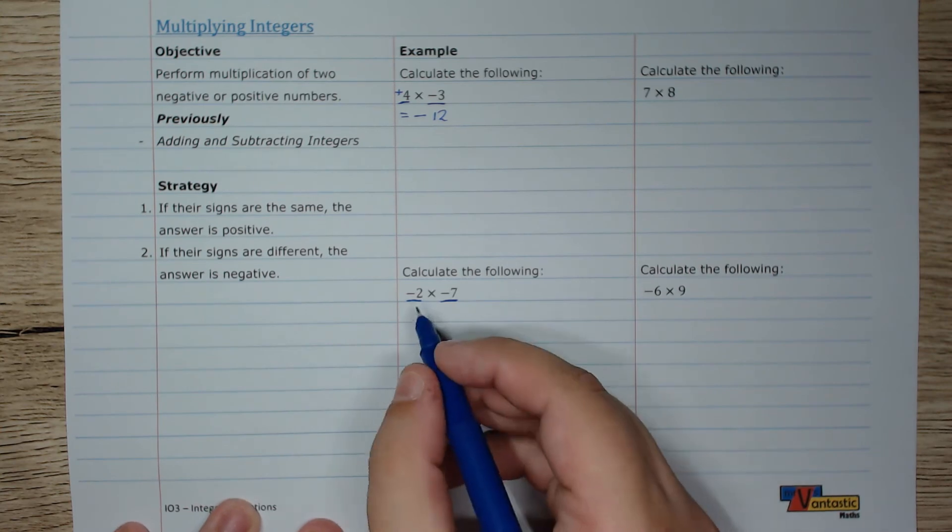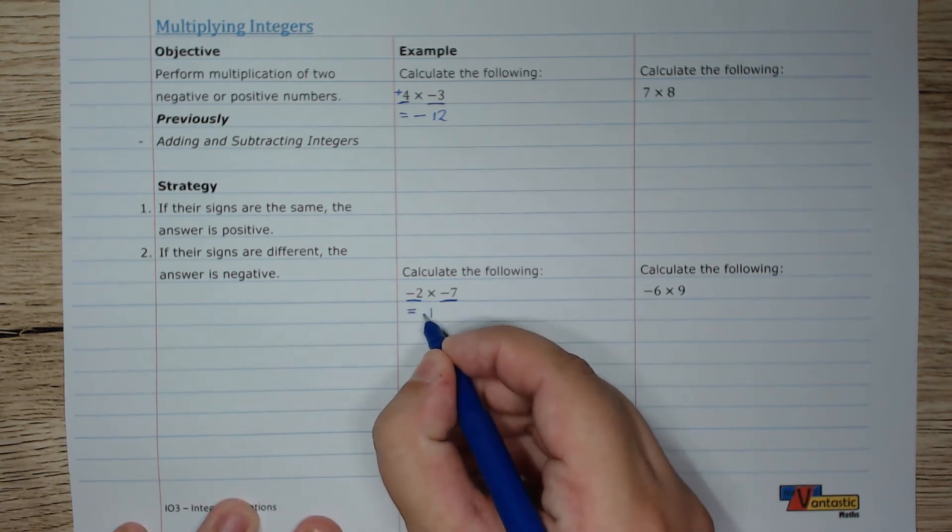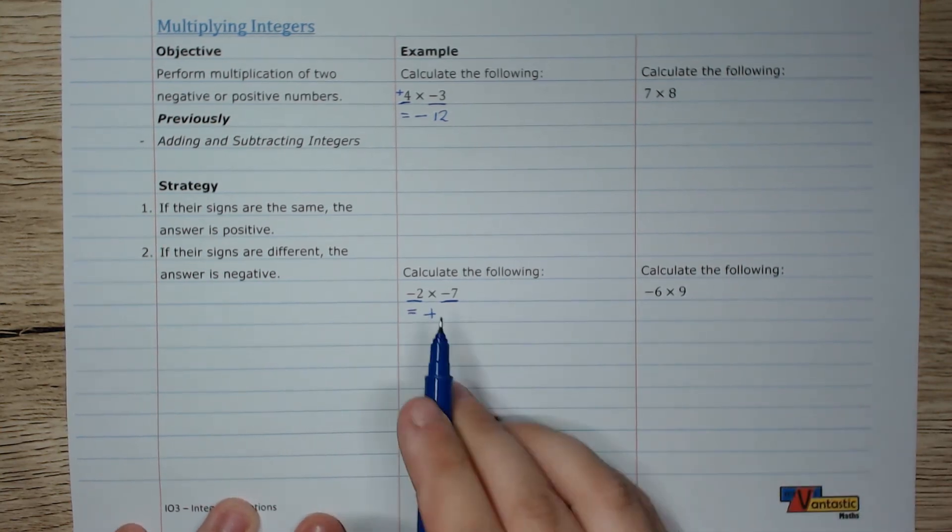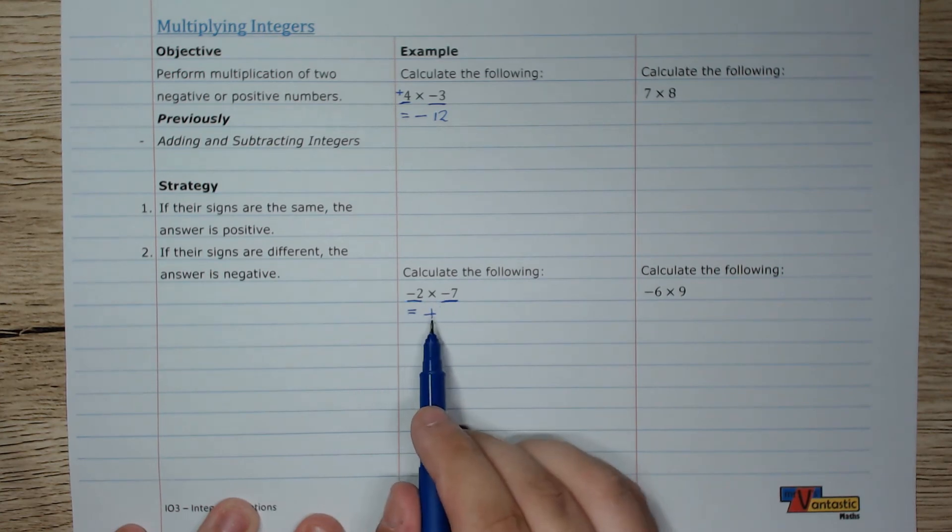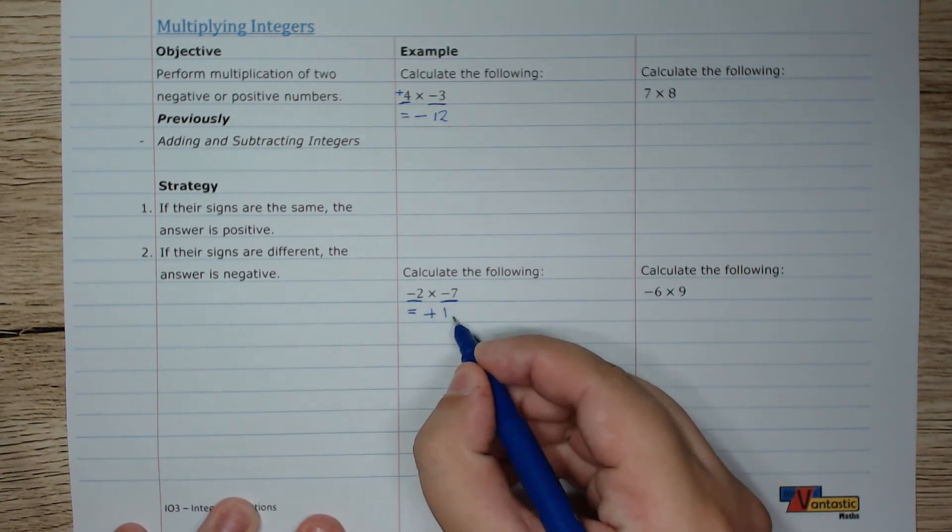So this answer is going to be a positive number. Even though both of the numbers are negative, the answer is positive. 2 times 7 is 14.